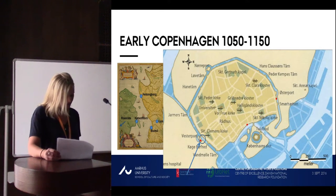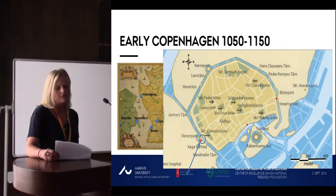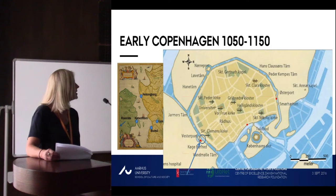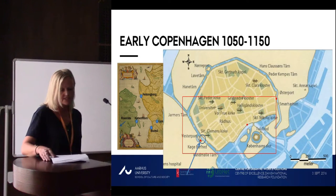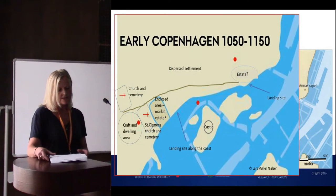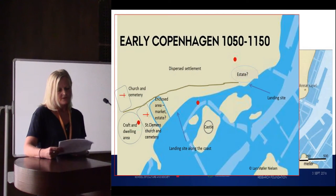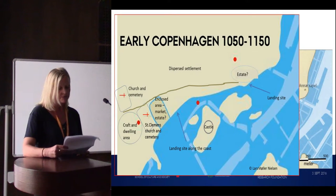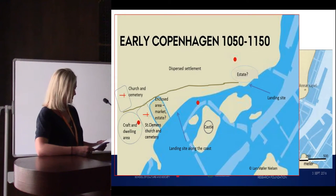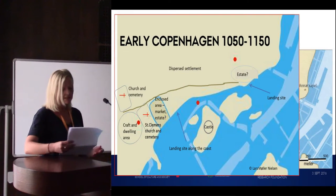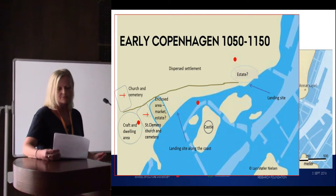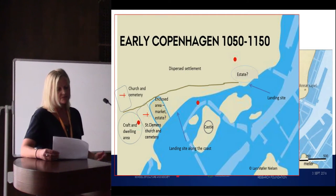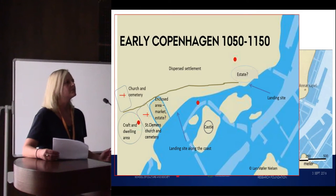The early medieval phase of the town has long been fairly unknown and subject of discussion and many theories. But later excavations show that the earliest phase of Copenhagen can be placed in the mid to late 11th centuries. We have remains of two cemeteries from this period, which indicate the presence of two churches, one of which was abandoned already after a hundred years.